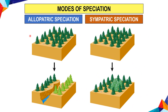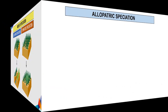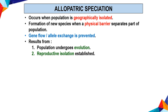Speciation is a process of two types: allopatric speciation and sympatric speciation. Allopatric speciation forms two sub-populations due to a geographic barrier. It occurs when a population is geographically isolated. Formation of a new species occurs when a physical barrier separates part of a population. Gene flow in allopatric speciation is prevented, resulting in populations undergoing evolution and reproductive isolation being established.